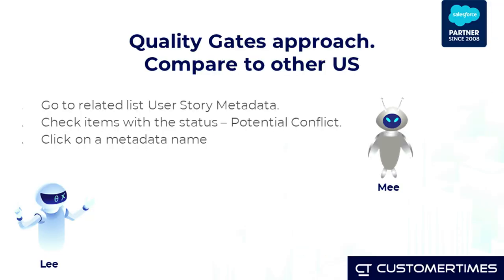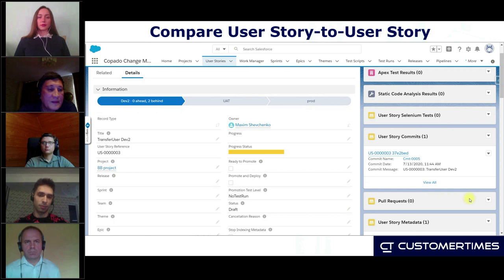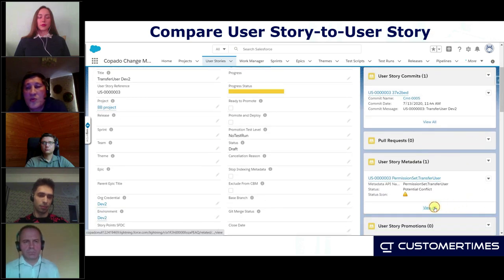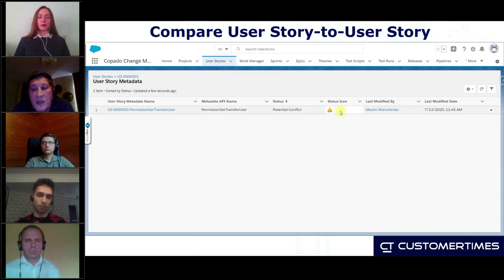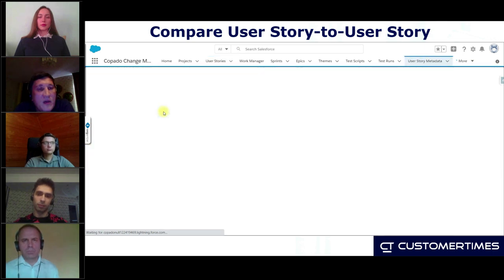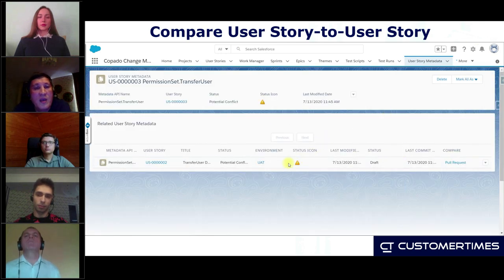Let's assume there is no conflict and it was not deployed yet — but we have a more advanced feature. In Copado, we can check potential conflicts against other user stories. So if in other user stories the same API name is committed but not deployed yet, even in that case we can see it. For that, we are going to use another related list called User Story Metadata. In Copado, you can see a yellow triangle — if I click on the name, we can see in which user story and in which environment we have a potential conflict.